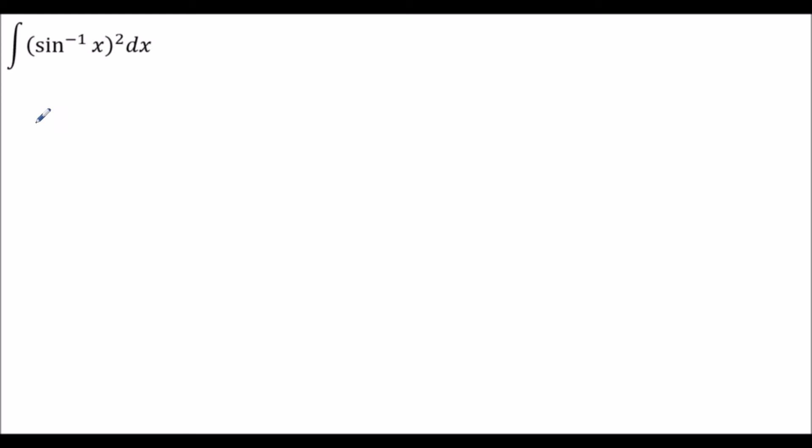To start this off we're going to use a u substitution and we're going to let u equal sine inverse x. With this definition of u we could start by taking the derivative but first let's take a look at what would happen if we took sine of both sides.